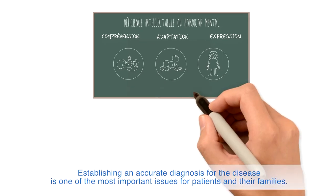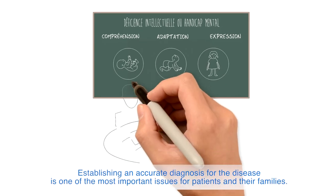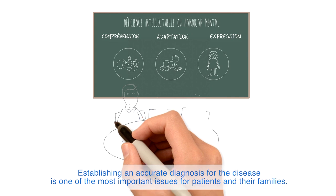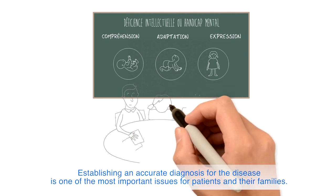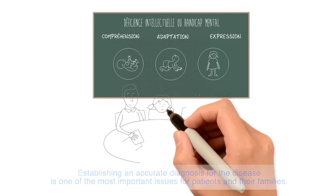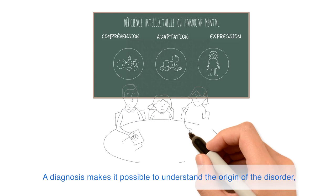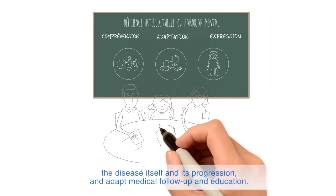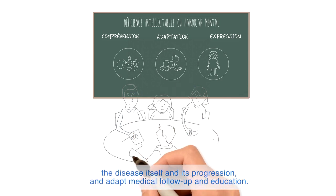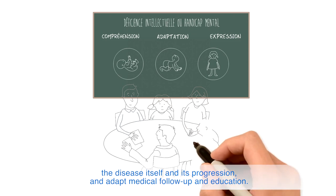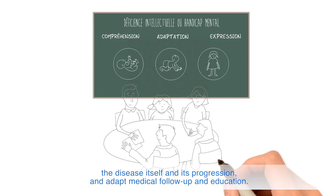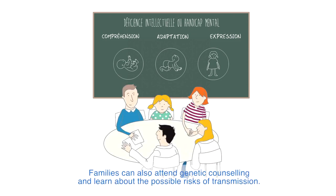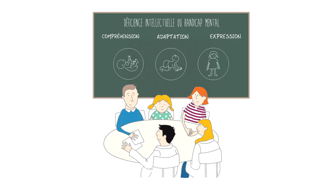Establishing an accurate diagnosis for the disease is one of the most important issues for patients and their families. A diagnosis makes it possible to understand the origin of the disorder, the disease itself, and its progression, and to adapt medical follow-up and education. Families can also attend genetic counseling and learn about the possible risks of transmission.